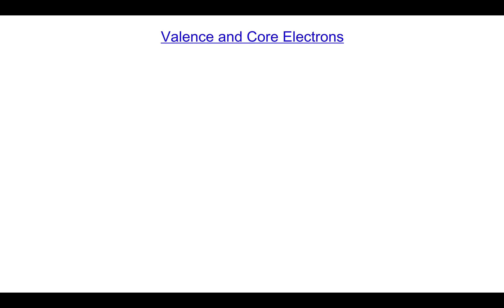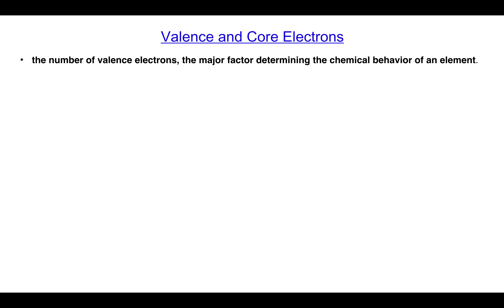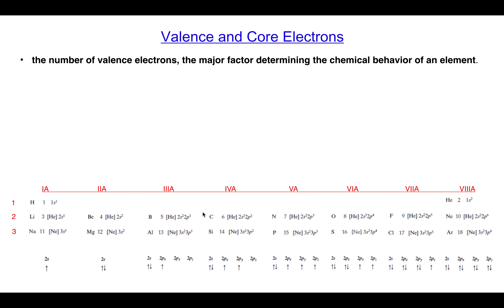Now we look at the valence and core electrons inside an atom. By looking at the nature of electrons towards chemical reactions, we can say there are two types of electrons: valence electrons and core electrons. The number of valence electrons — those in the outermost shell — is the major factor that determines the chemical behavior of elements. For example, here we have the first three periods of the periodic table.